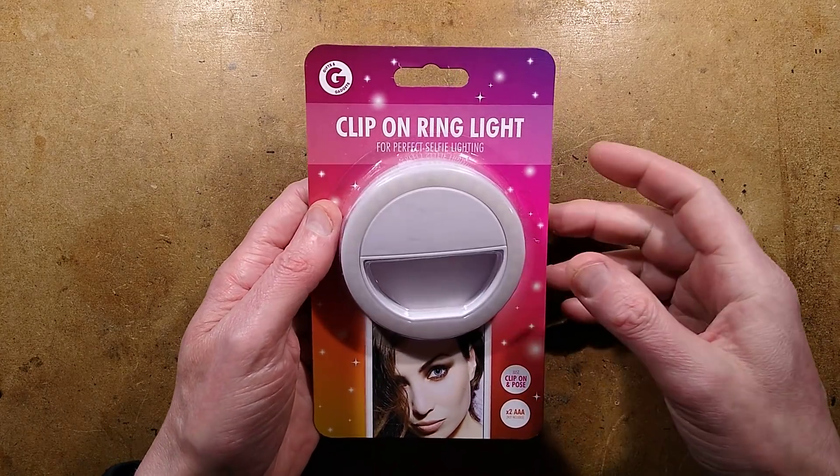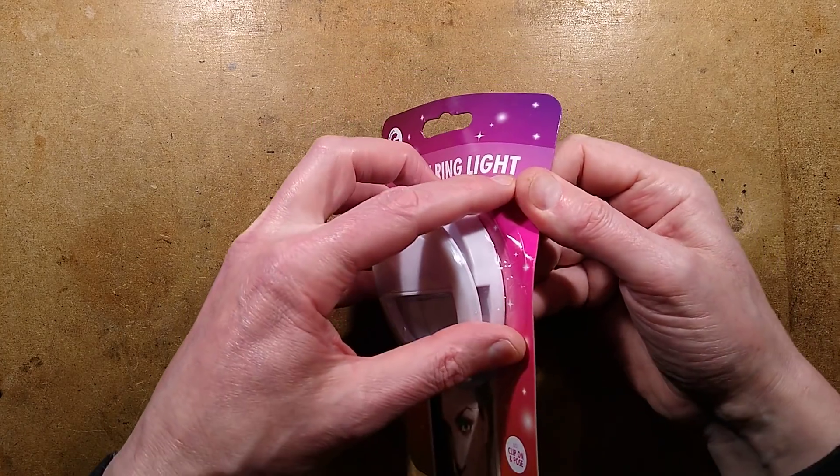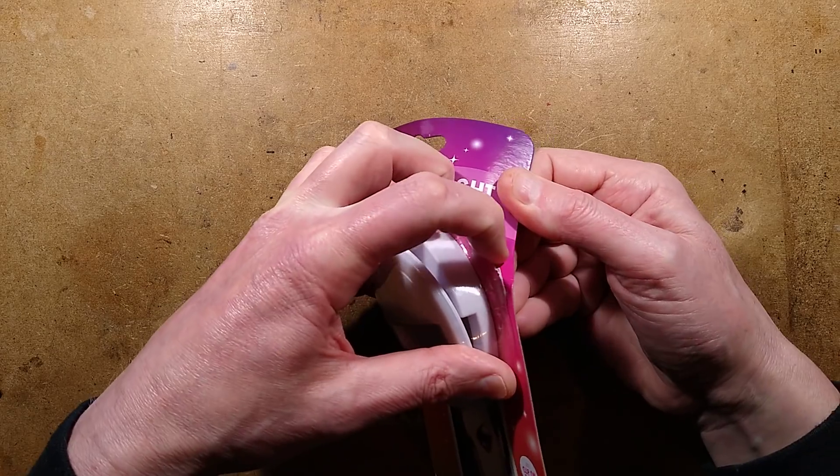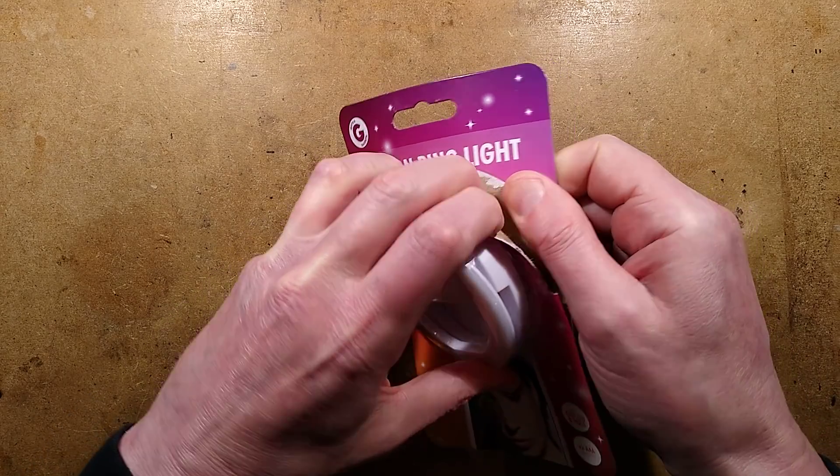A clip-on ring light. This is designed to clip onto your phone. Let me get it out and show you. It's not actually for taking pictures of people's rings.